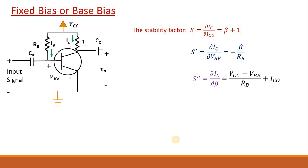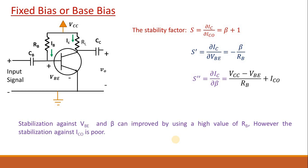In this case we have seen that stabilization against VBE and beta can be improved by changing RB which is given in the circuit. However, stabilization against reverse saturation current is very poor. Therefore, sometimes this kind of biasing will not work.